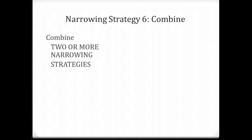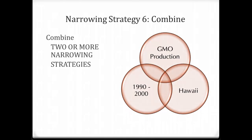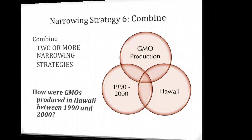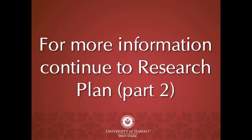The best and preferred way to develop a narrow enough research question is to use two or three of these strategies. For example, you can use time and place and come up with a research question like: how were GMOs produced in Hawaii between 1990 and 2000? For more information about the research process, including how to develop keywords, please watch part two.